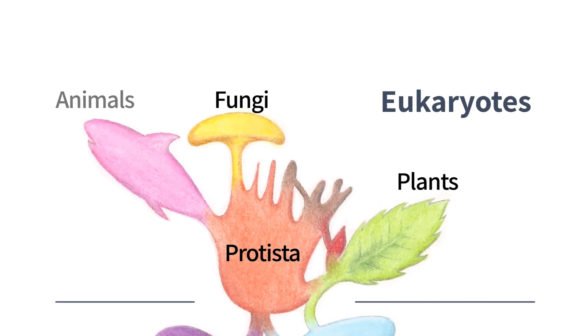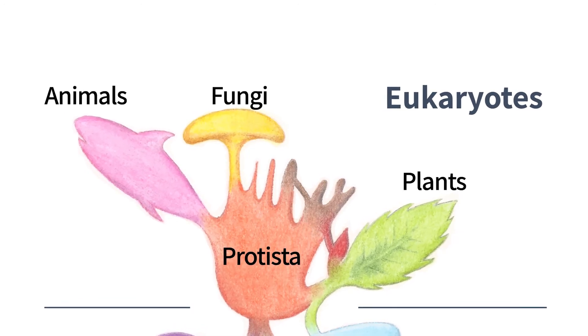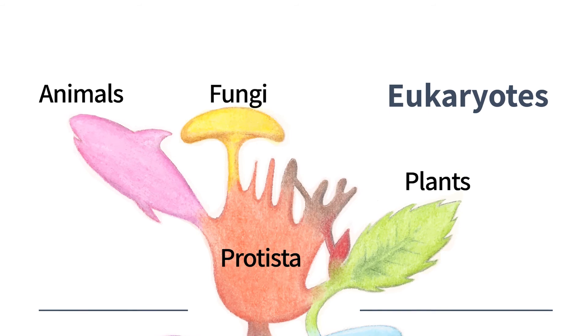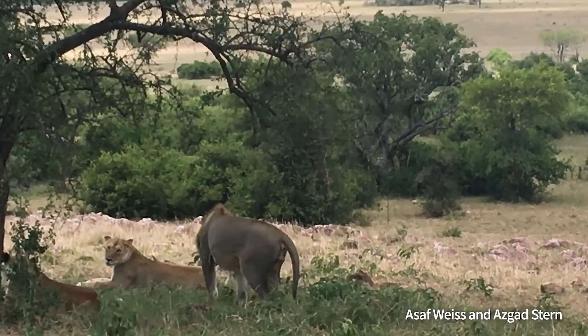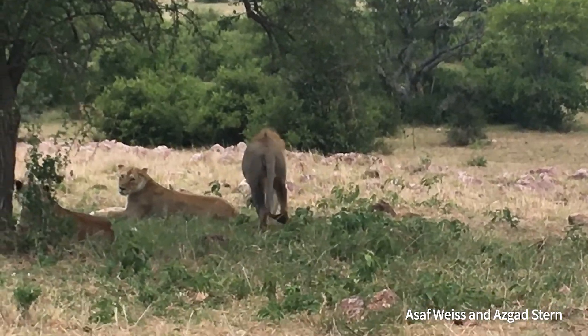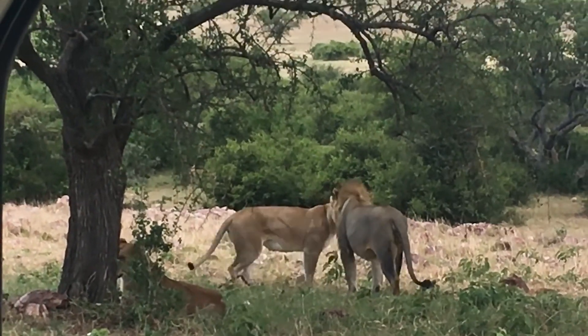The last common ancestor of all these life forms already performed meiosis exactly in the same manner as all eukaryotes do it today. The role of sexual reproduction in its omnipresence is one of the most intriguing unsolved evolutionary questions. Already Darwin called it the queen of all biological questions.